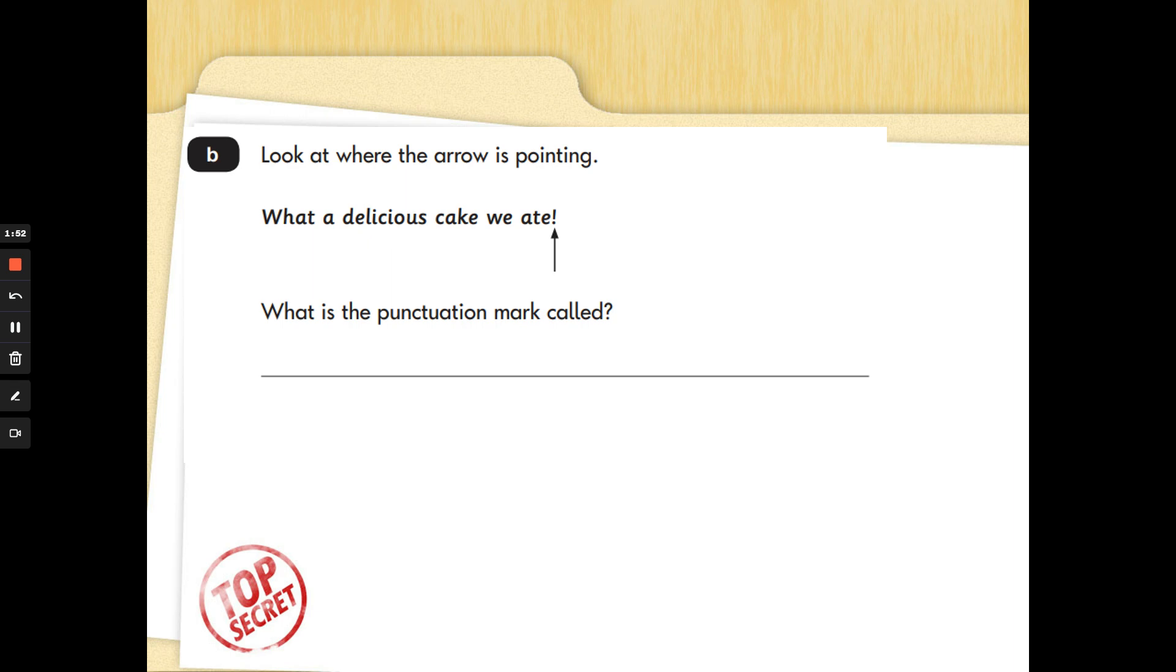Question B. Look at where the arrow is pointing. What a delicious cake we ate. What is that punctuation mark called? We've just done it. That's right. Exclamation mark. Well remembered.